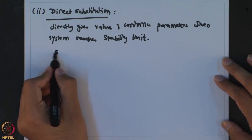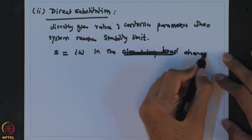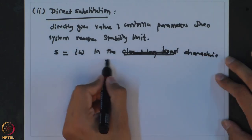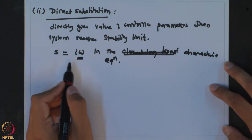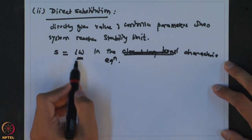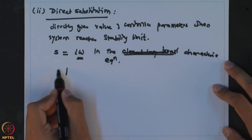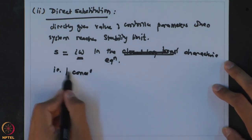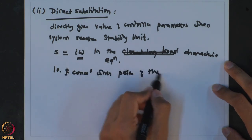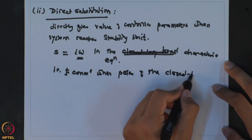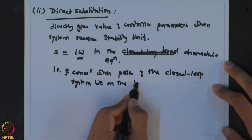What you do is substitute S equal to iω in the characteristic equation. This tries to find out the value of the controller parameters at which the poles will lie on the imaginary axis — that is the condition when the poles of the closed loop system lie on the imaginary axis.